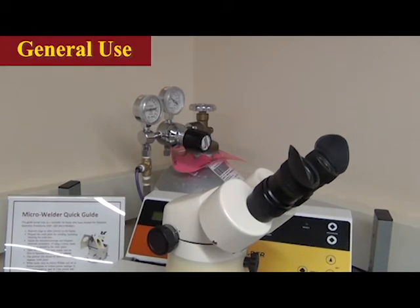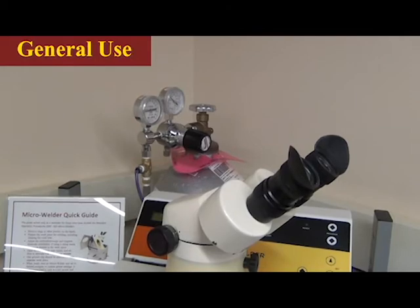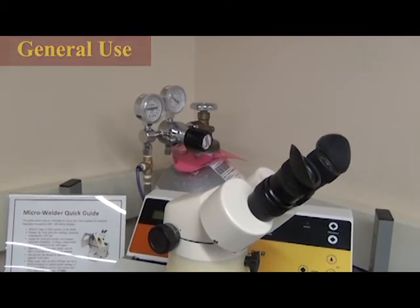After making all the adjustments, you can now begin the microwelder process. Turn on the main argon tank supply and set the flow to between three to five liters per minute.